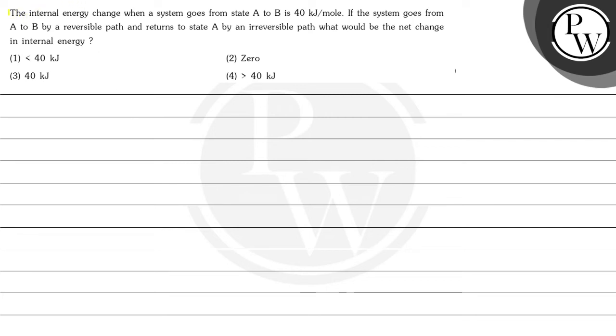Hello, let's read this question. The question says the internal energy change when a system goes from state A to state B is 40 kJ per mole. If the system goes from A to B by a reversible path and returns to state A by an irreversible path, what would be the net change in internal energy?